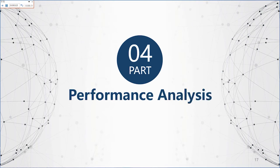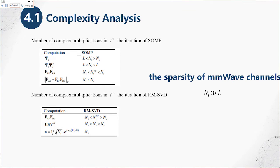The fourth part is performance analysis. First, we compare the complexity of the algorithms. The number of complex multiplications during each iteration of the hybrid precoding algorithms of SOMP and RMSVD is shown in the table. Due to the sparsity of millimeter wave channels, the number of SOMP basis vectors is much larger than the number of basis vectors in the candidate matrix, so the RMSVD algorithm requires more complex multiplications.